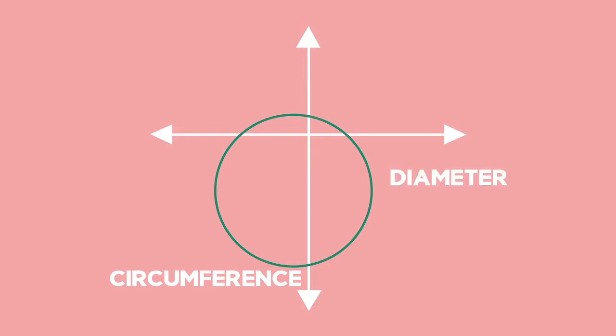A diameter of a circle is any line passing through the centre of the circle which connects two points of the circle. The diameter is also the maximum distance between two points on a circle.